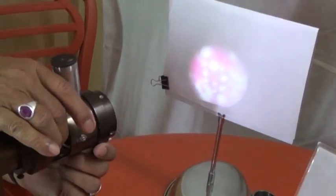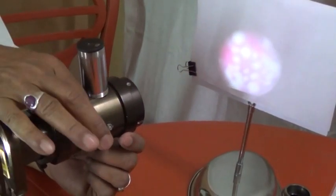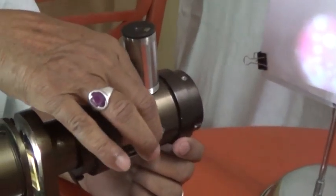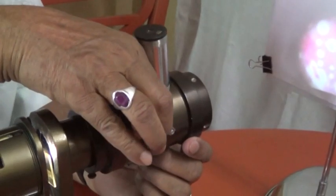The adjusting knob is to be operated to get the clear image. We are viewing the clear image of this specimen.